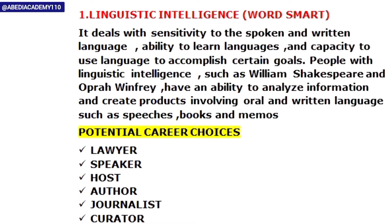The first type is linguistic intelligence — word smart. People with linguistic intelligence are very sensitive about the words they speak, the type of language they use, and whether they are achieving the goals of language. They have the ability to analyze information, create products, and use oral and written language — for example, speeches, books, and memos. Examples include William Shakespeare and Oprah Winfrey. Career options include lawyer, speaker, host, author, journalist, or curator.